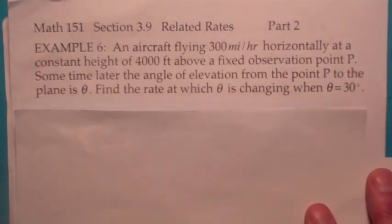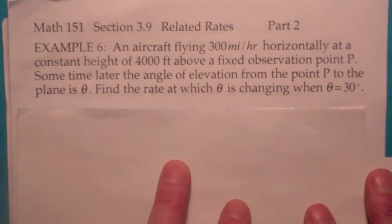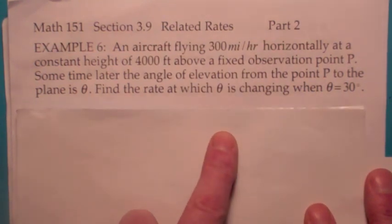In this one you have an aircraft flying at 300 miles per hour, horizontally at a constant height of 4,000 feet, and it passes over an observation point P. Sometime later the angle of elevation to the plane is theta, and the question is find how fast theta is changing when theta equals 30 degrees.